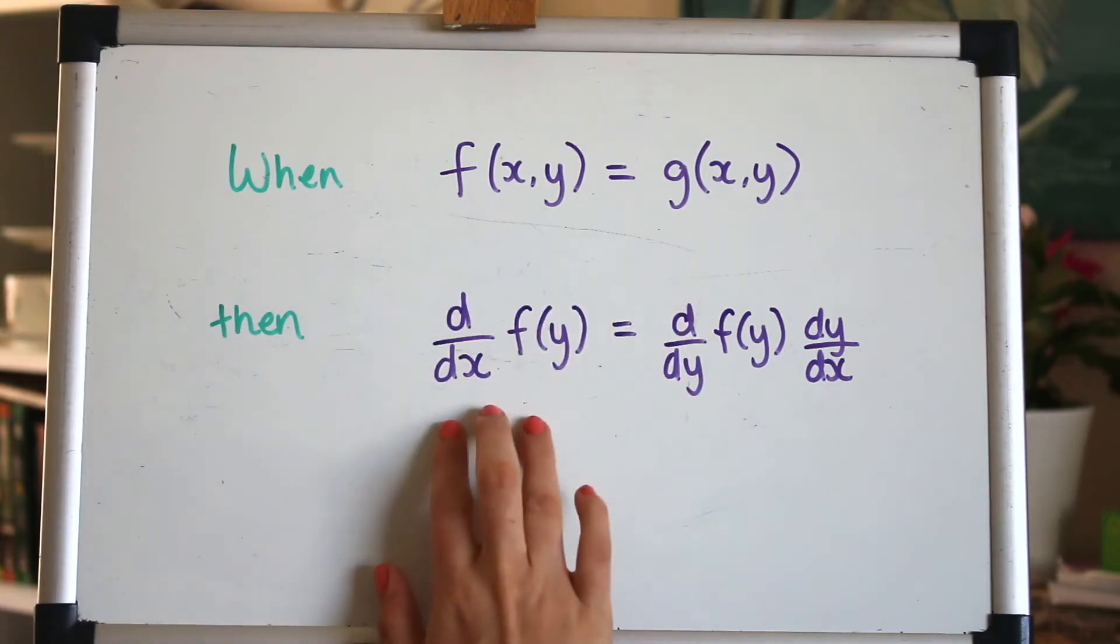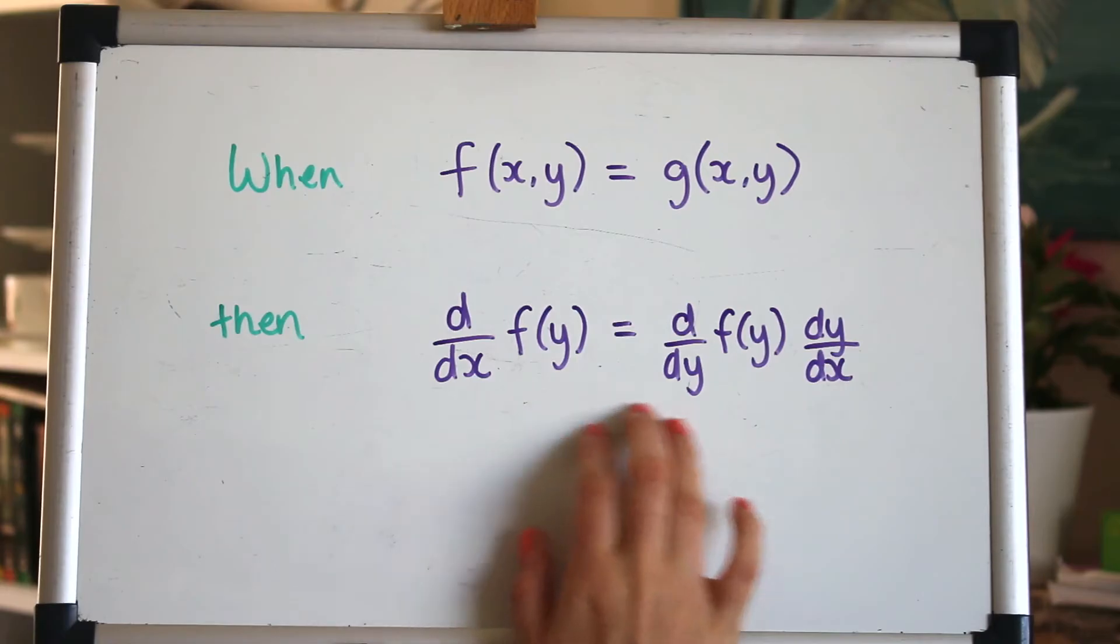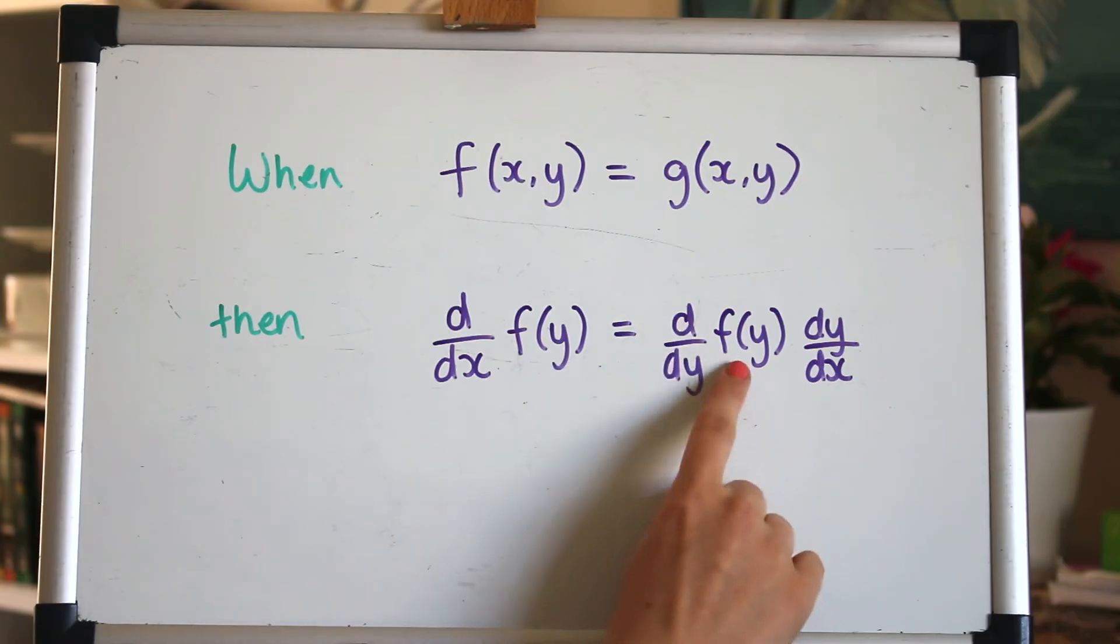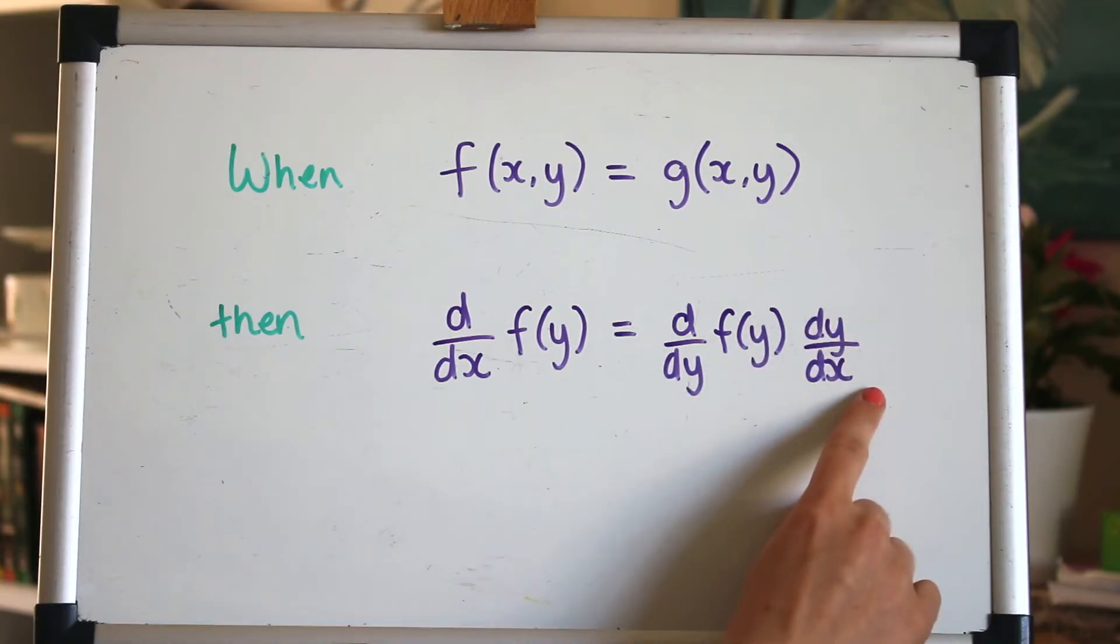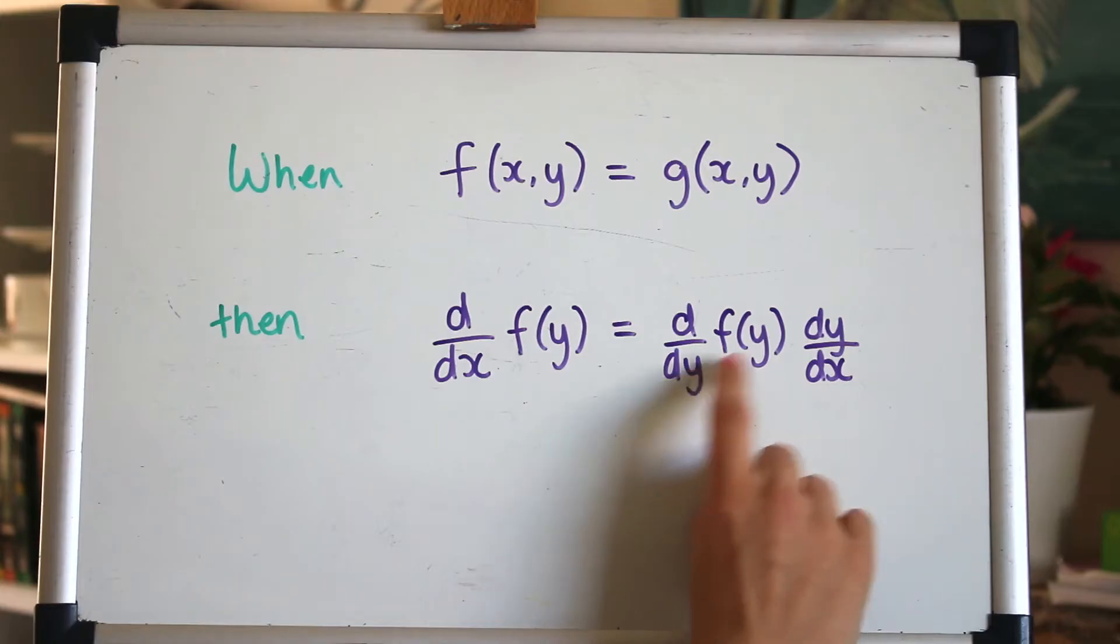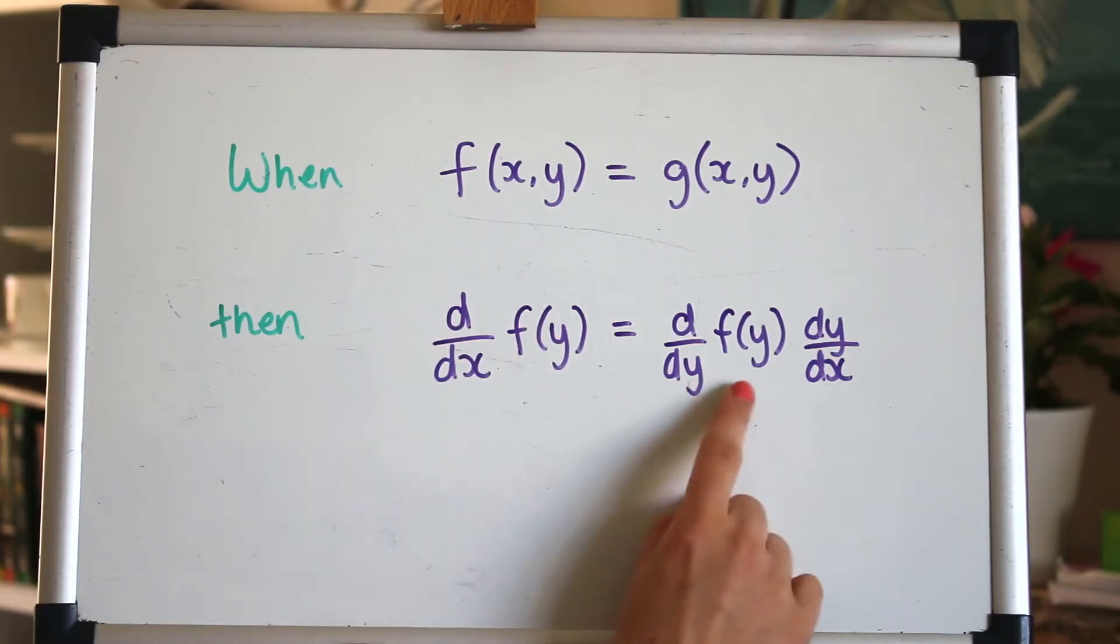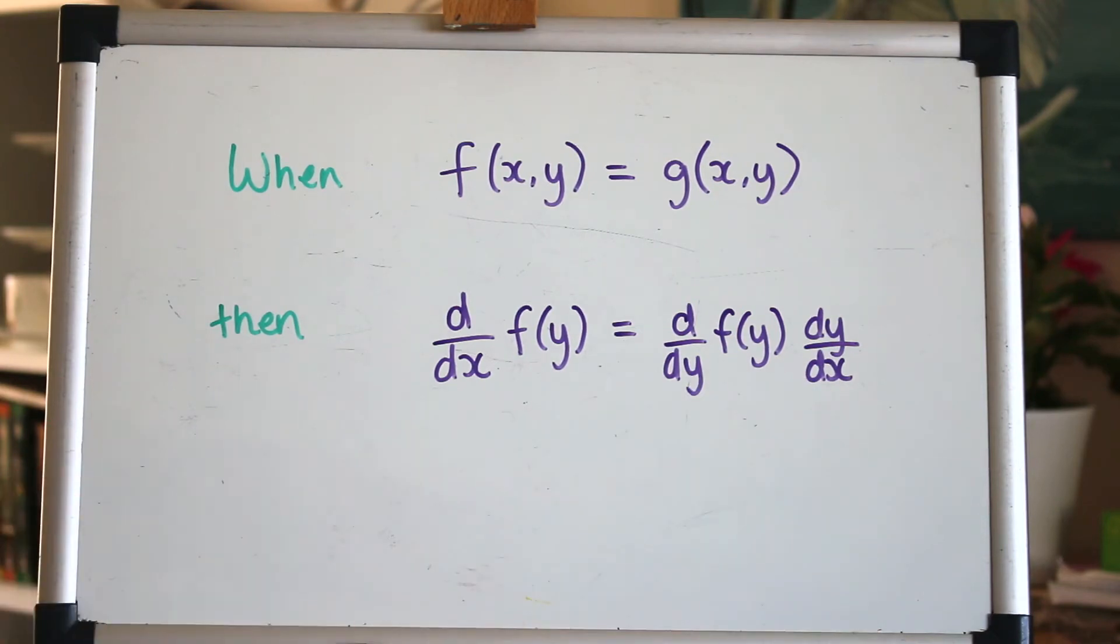So when you've got that what you need to do is use implicit differentiation and this looks a bit complicated but all it's saying is to differentiate your function of y with respect to x, what you need to do is differentiate your function of y with respect to y instead but times it by dy by dx. So can you see how this works here? If you cancel dy on the top and the bottom then you're left with the same thing as you've got over here. So in practice differentiate your function of y with respect to y and then just multiply by dy by dx. In practice it's extremely easy to do. Just differentiate your y's and write dy by dx after them. Let's work through some examples.